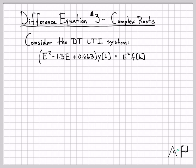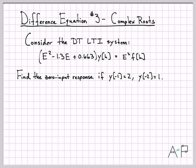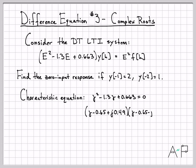Here's the discrete time system we'll be working with. We've written it using the advanced operator notation, the E symbol — that is the polynomial Q of E. To find the zero input response, we need the initial conditions, since the zero input response is due to those initial conditions and how they evolve over time. The key thing we need is the characteristic equation, which we find by taking Q of E, replacing the E's with gammas, and setting that characteristic polynomial equal to zero.